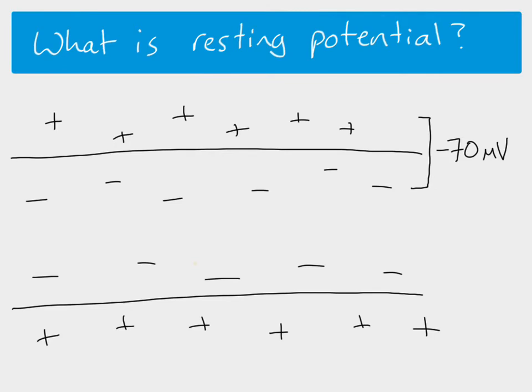It's really important to understand that just because it says negatives here, that's not because we have only negative ions there and positive ions here. The positive and negative signs just tell us the relative difference — it's more positive on the outside and more negative on the inside. You could say it's more positive on the outside and less positive on the inside. It's a relative idea. So at resting potential, the difference in the charges on either side of that membrane is minus 70 millivolts. This charge is also to do with the ions that are present. Those ions can move, and we'll look at how that works in another video.